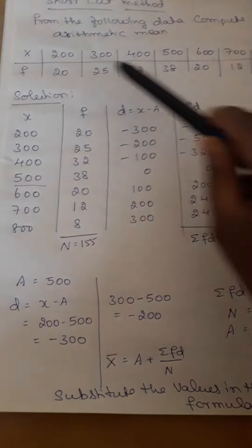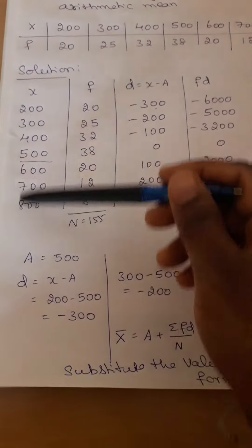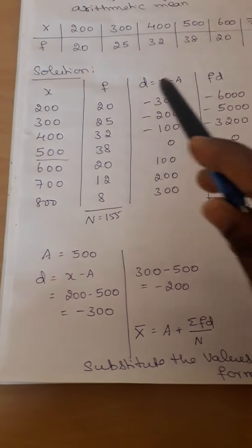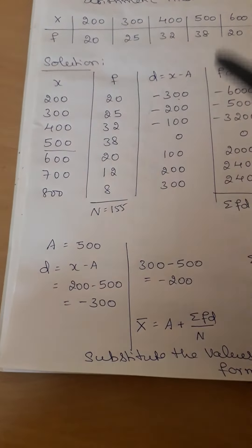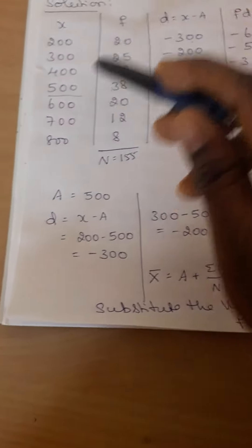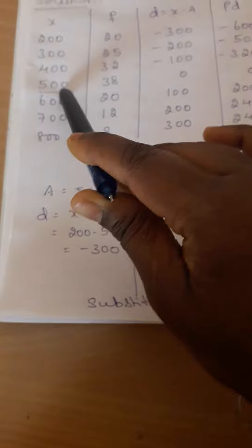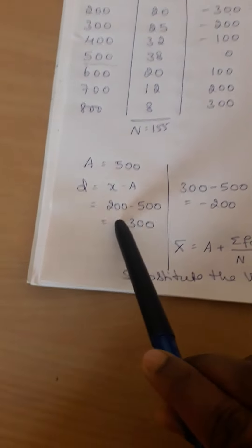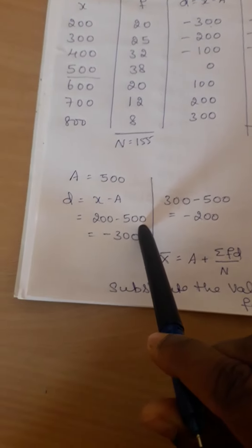Discrete series shortcut method problem is given like this. Solution for the problem: x variable column, frequency column, d equals x minus A. In this case, I have taken my assumed mean as 500, so d equals x minus A where 200 is the variable and A is my assumed mean.